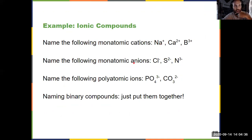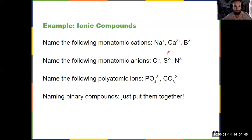The anions are where we have to add that suffix. Notice these are all negatively charged — this isn't chlorine anymore with a negative charge, it's chloride, sulfide, nitride. But if they're negatively charged polyatomic ions, it's just the name of the ion. So: phosphate, carbonate.